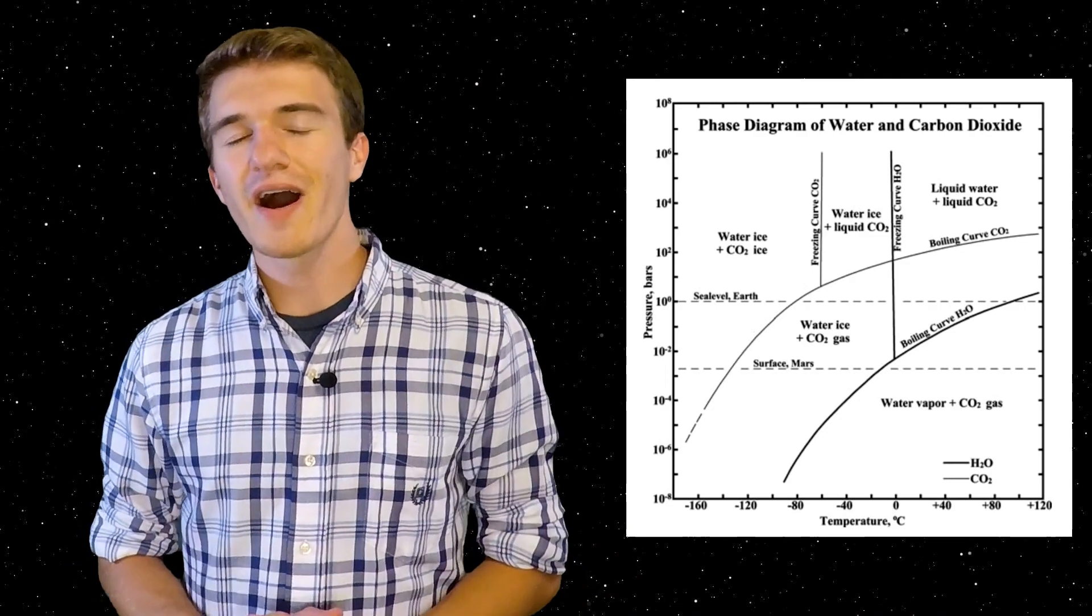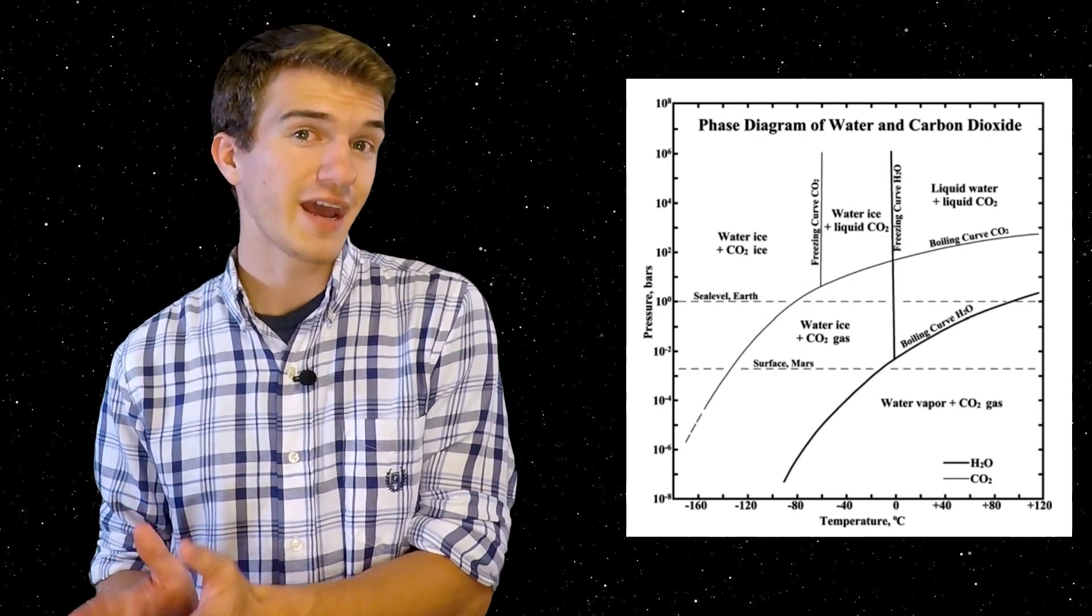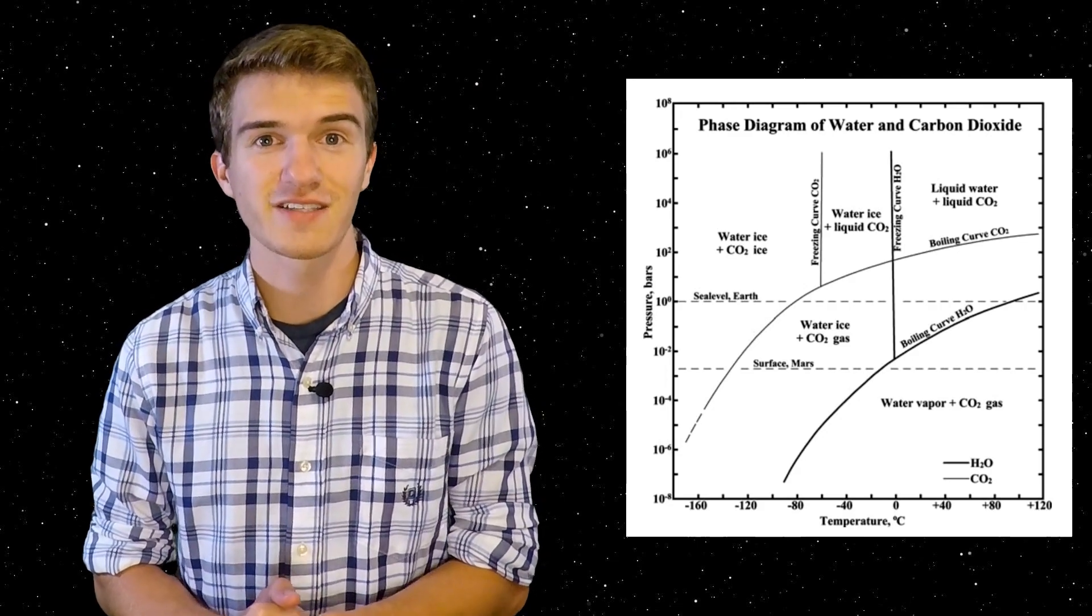So in this case, when the carbon dioxide goes from colder than negative 125 degrees Celsius to warmer than negative 125 degrees Celsius, it will sublimate, meaning it will go from this dry ice state directly to a gaseous state.